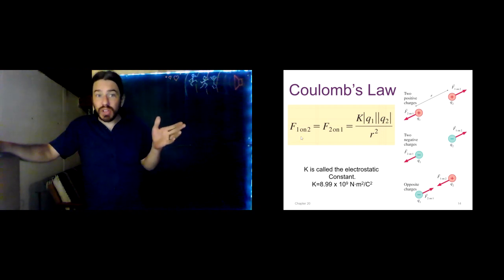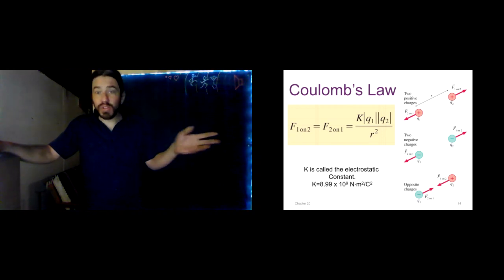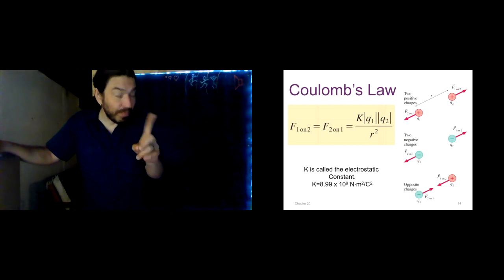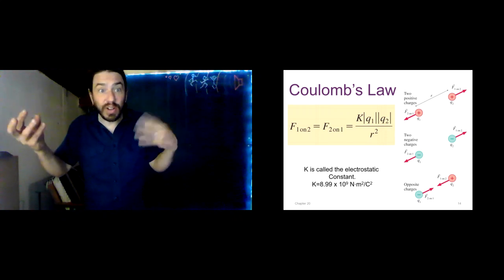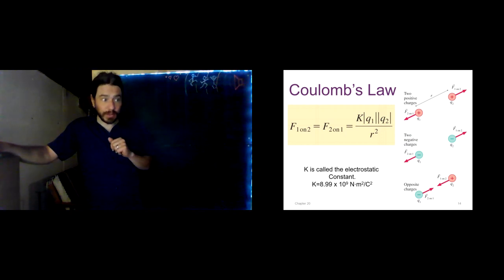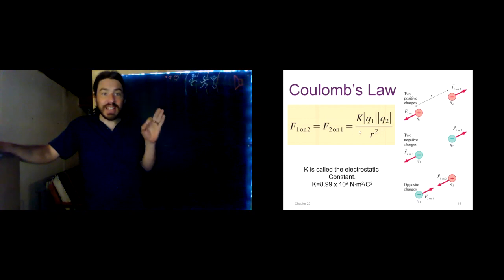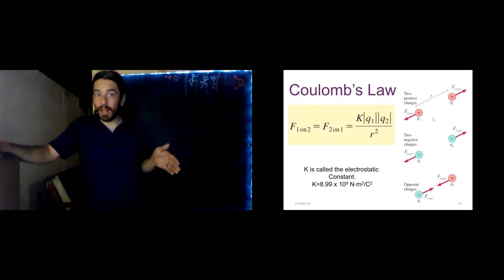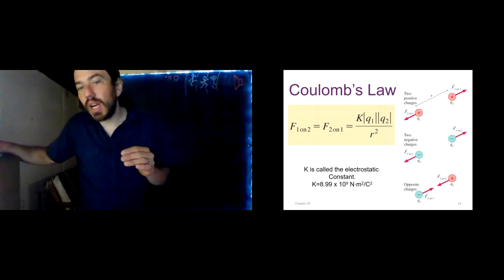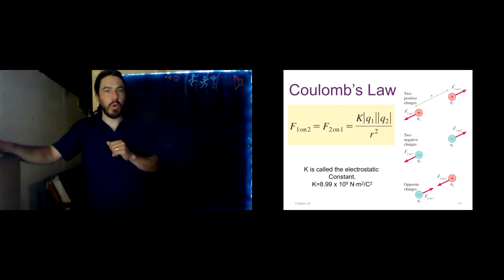Don't forget Newton's third law. If charge 1 exerts a force on charge 2, then charge 2 exerts the exact same magnitude of force in the opposite direction on charge 1. So F1 on 2 equals F2 on 1 in magnitude — always. This equation gives us the magnitude of the electrical force. Like charges repel, whether positive or negative, and opposite charges attract. The constant K is 8.99 times 10 to the 9th Newton·meters squared per Coulomb squared — it just makes all the units work out.